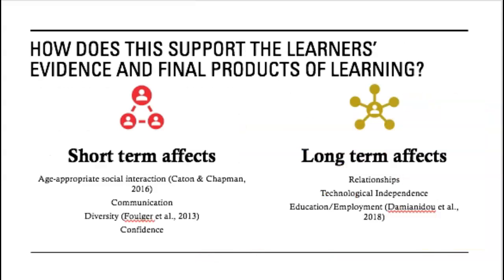So what are the short-term and long-term effects — the final products of learning? Short-term: engage in age-appropriate social interactions as they get older, according to Caton and Chapman in 2016. Gain communication, typing, and literacy skills through reading, responding, and creating their own posts. Be introduced to diverse cultures and perspectives, according to Fulger and colleagues in 2013. Become more confident and empowered when using technology and communicating with others.